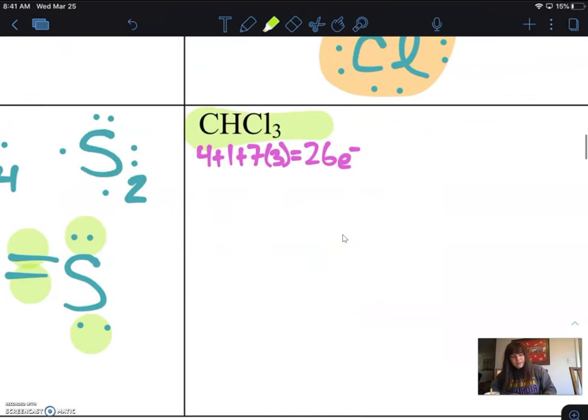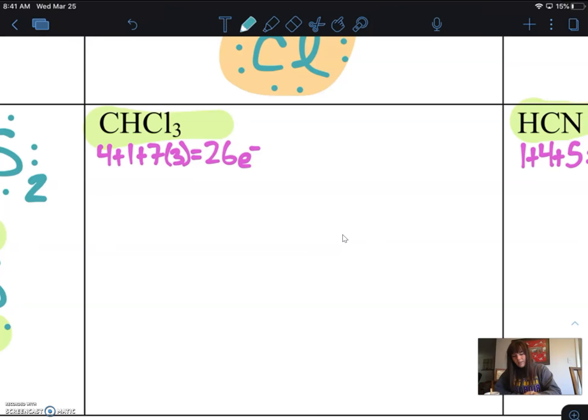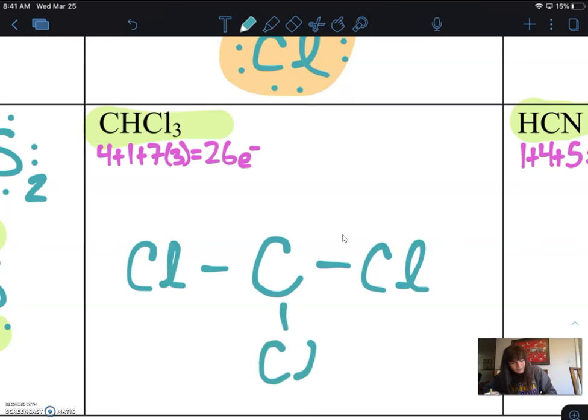Okay. Now the next one looks a little bit more difficult because suddenly we have three different elements we're working with in this compound. But we keep calm. We do the same process. We have carbon. We immediately know it's going to go in the center. Now I'm going to focus on the chlorines first because we've got three of them. And again, we always want to try and make this molecule as symmetrical as possible, this compound. So I'm going to start with that. I'm going to put my chlorines left to right. I'm going to put one on the bottom. That makes it easy to see that I only have one more space and that's got to go to hydrogen.